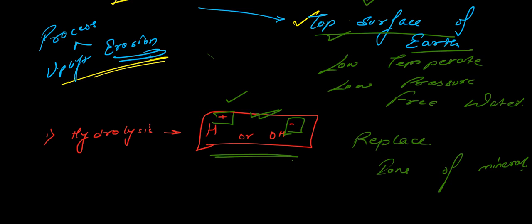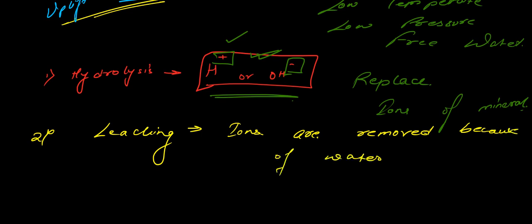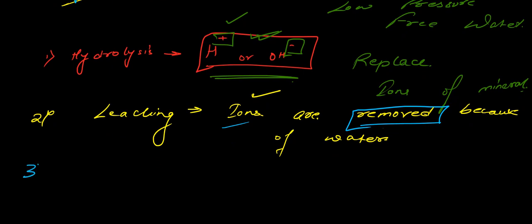The second process is leaching. In leaching, ions are removed because of the flowing of water. The ions are basically dissolved in water and are flown away, so there are no more positive or negative ions in the minerals. There is a decrease in ions, and therefore the minerals change their condition and become disintegrated.